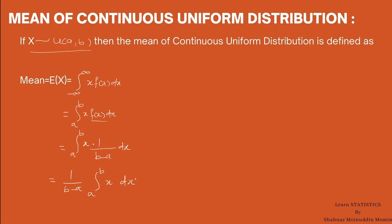In the previous lecture, we already learned the definition, PDF, and cumulative distribution function of continuous uniform distribution. If students want to review that lecture, click on the i button at the top right corner of the screen; the link is also given in the description box. We know that the integration of x is x squared upon 2, evaluated over the limit a to b.